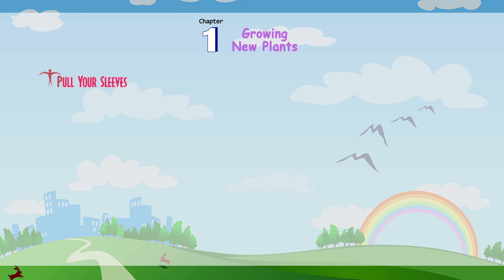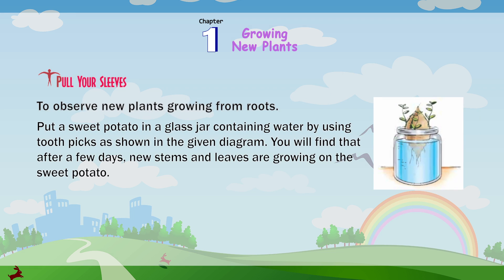Pull up your sleeves — to observe new plants growing from roots. Put a sweet potato in a glass jar containing water by using toothpicks as shown in the given diagram. You will find that after a few days, new stems and leaves are growing on the sweet potato.